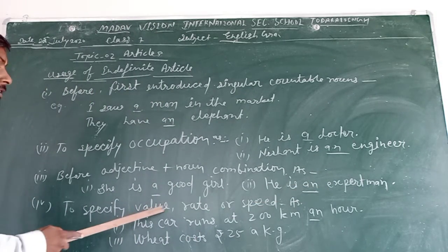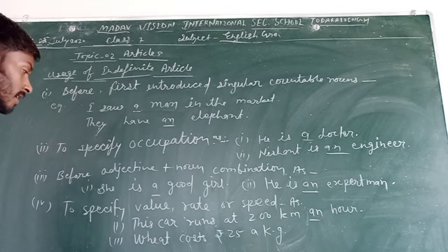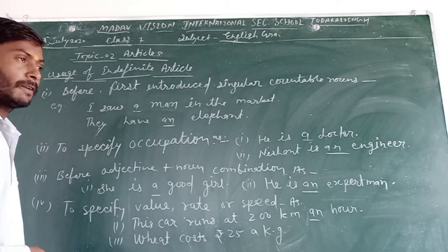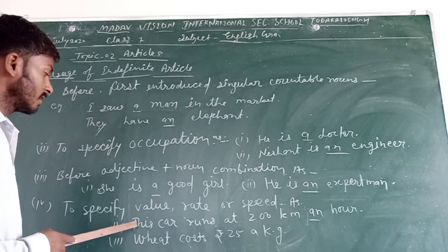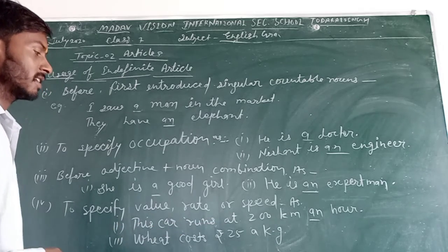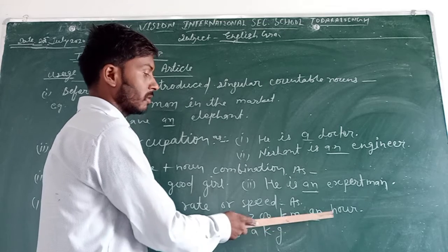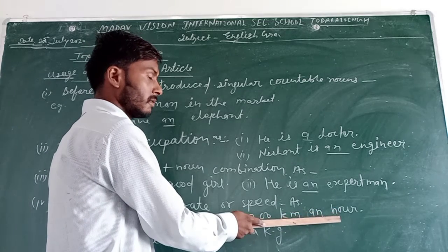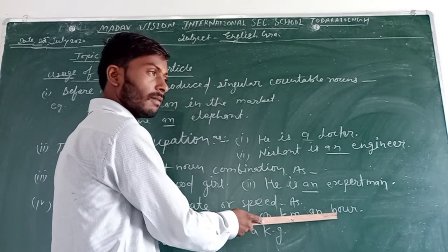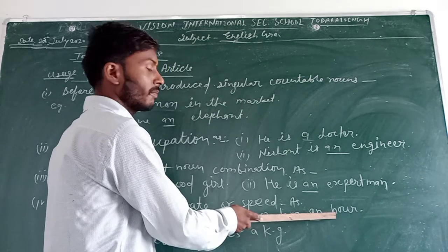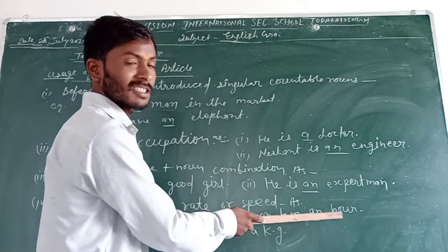To specify value, rate, or span, indefinite article is used. This car runs at 200 kilometers an hour. An is used because the noun first letter of this noun has vowel sound.